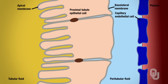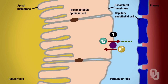Number one is your primary active transport — the sodium-potassium pump. Here, sodium is transported from a low concentration inside the cell toward a high concentration outside, and potassium goes from a low concentration outside to a high concentration inside the cell. You have to have the sodium-potassium pump in order to maintain the gradients for sodium and potassium. Without these gradients, you won't be able to reabsorb sodium and therefore won't be able to reabsorb other solutes including water.